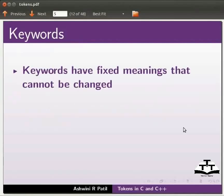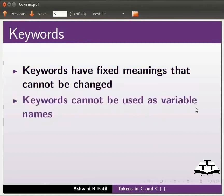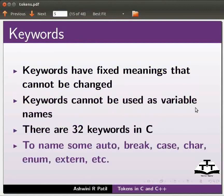Keywords have fixed meanings that cannot be changed. Keywords cannot be used as variable names. There are 32 keywords in C. To name some: auto, break, case, char, enum, extern, etc.